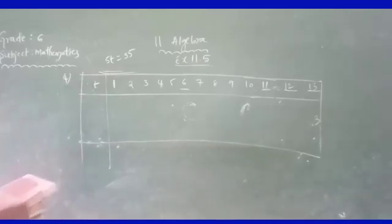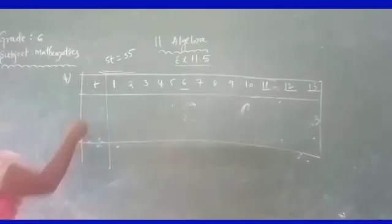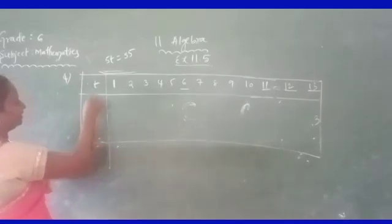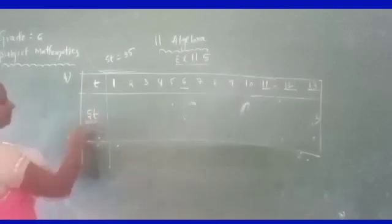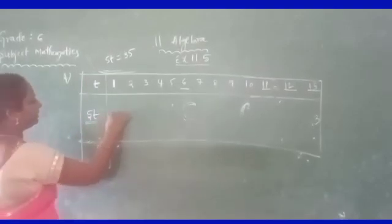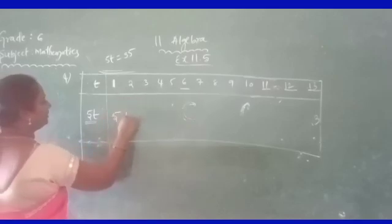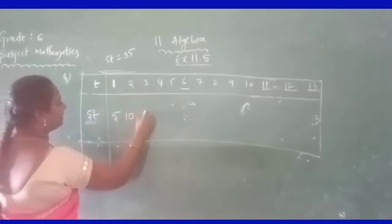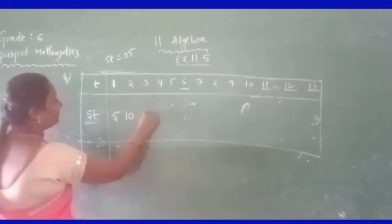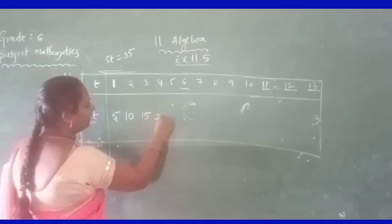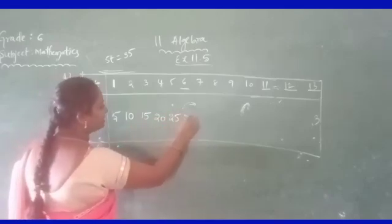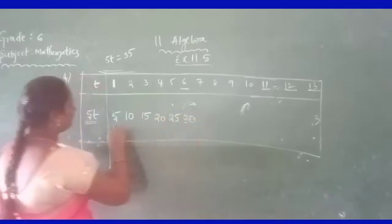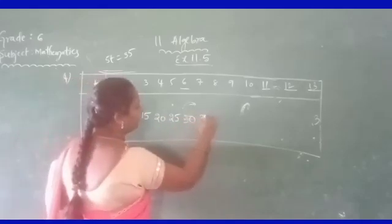Filling the table for 5T: when T is 1, 5 times 1 is 5; T is 2, result is 10; T is 3, result is 15; T is 4, result is 20; T is 5, result is 25; T is 6, result is 30; T is 7, result is 35.